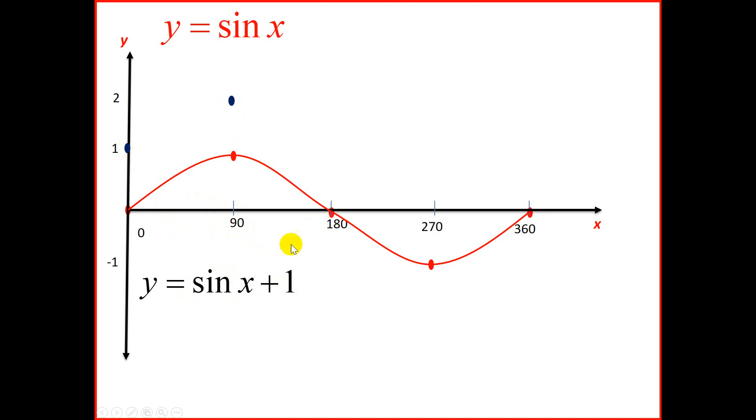At 180, we're going to type sine 180 plus 1, and that should give us 1. At 270, we're going to type sine 270 plus 1, and that should give us 0. At 360, we're going to type sine 360 plus 1, and that should give us 1.